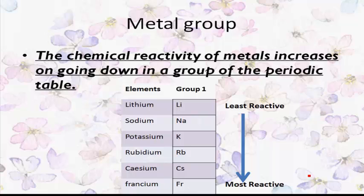In metals, the chemical reactivity increases on going downwards in a group of the modern periodic table. For example, in group 1 we have lithium, sodium, potassium, rubidium, cesium, and francium — and the reactivity goes on increasing when we move from top to bottom in the group. But how is this possible when elements have the same valency and similar chemical properties?